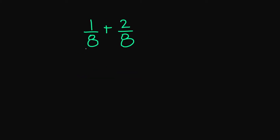Let's try 1 over 8 plus 2 over 8. Notice my denominators are the same, so I can go ahead and add. 1 plus 2 is 3, and this is going to give me 3 over 8.